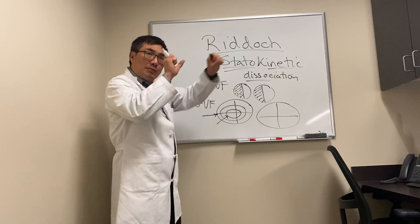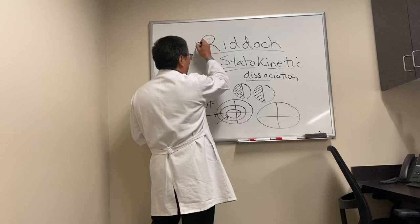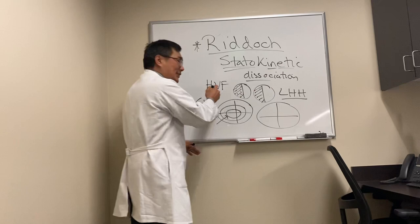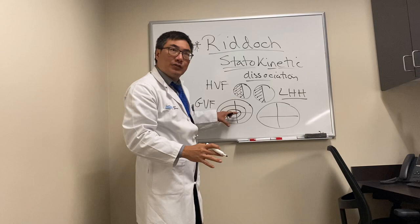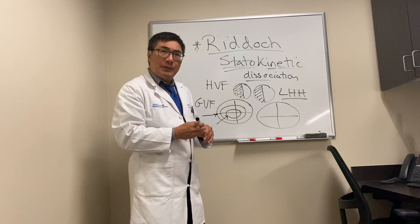So literally, a patient who has the RIDOC phenomenon might have a left complete homonymous hemianopsia on static perimetry and a totally normal Goldmann kinetic visual field. That dissociation between static and kinetic is a very uncommon phenomenon.